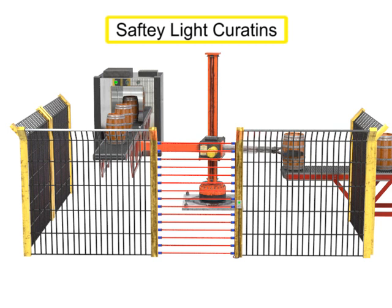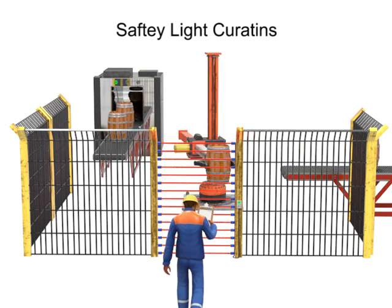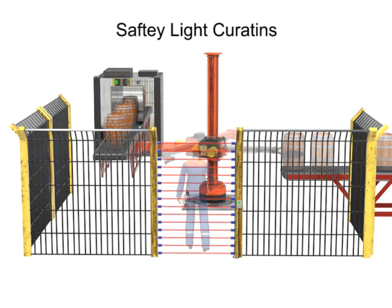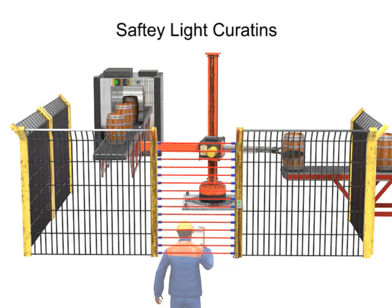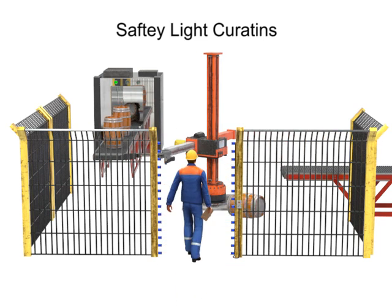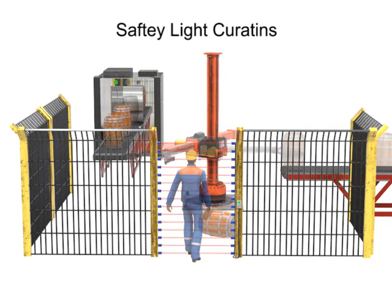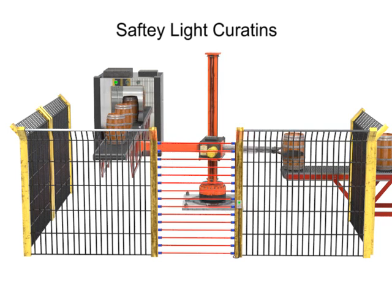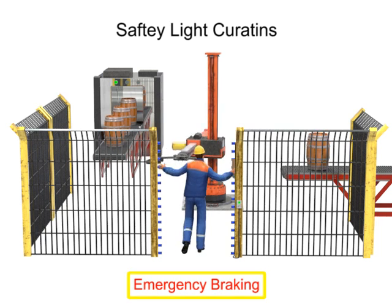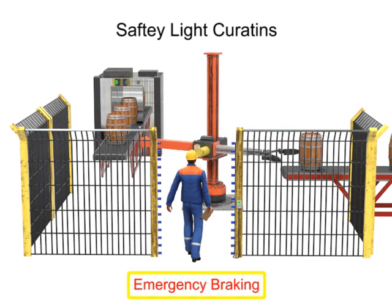Safety light curtains are another type of presence sensing device. When a person enters the work envelope, the light beam is interrupted, which sends a signal to the robot. For certain work scenarios, sudden stops could cause the work to become uncontained, as objects may continue to move even after the robot stops. In these cases, emergency braking is used in lieu of completely stopping — the robot slows down work and does not stop suddenly.